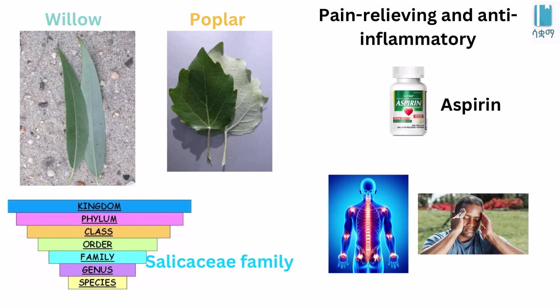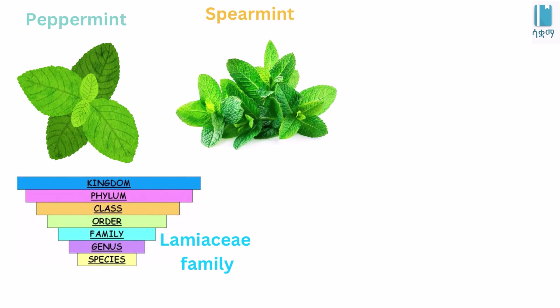The pain-relieving anti-inflammatory aspirin — when we started out we could use aspirin, and there are also alternatives like peppermint or spearmint. There are many plants in the same family that have medicinal properties.